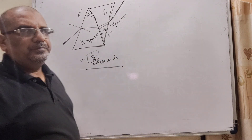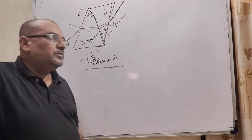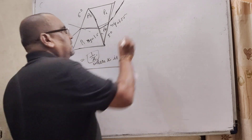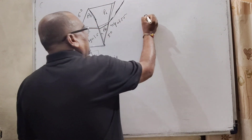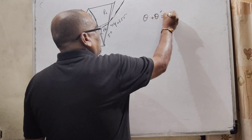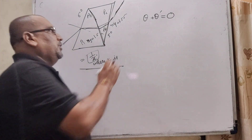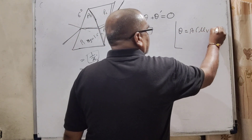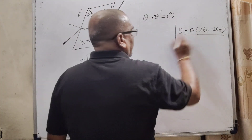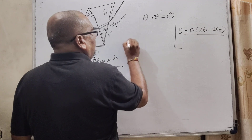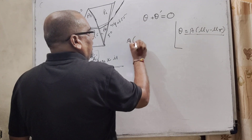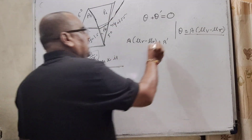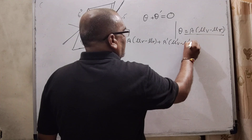We will use two conditions based on dispersive power. Since there is no dispersion, the net dispersion is zero. If the dispersion of the first prism is theta and for the second is theta-dash, then theta + theta-dash = 0. Here, theta means angular dispersion, that is A(μv − μr). Substituting for both prisms: A(μv − μr) + A'(μ'v − μ'r) = 0, which gives A(μv − μr) = −A'(μ'v − μ'r).